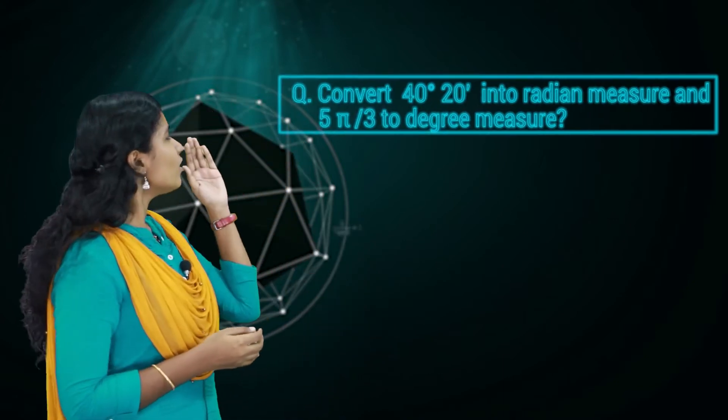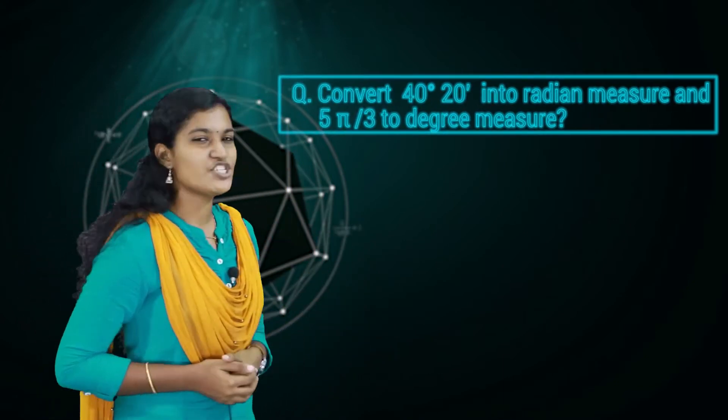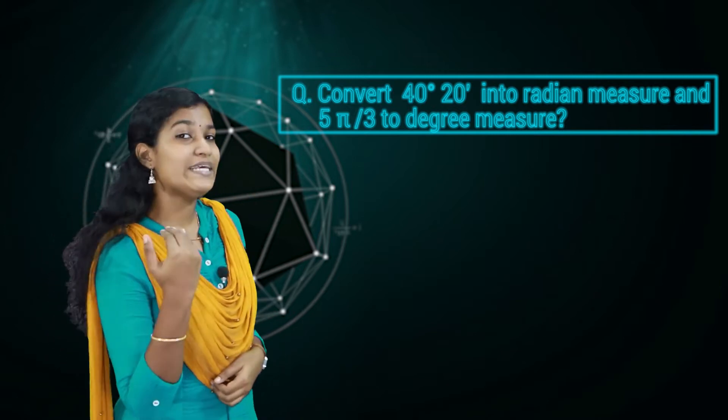We can say that real numbers are the same as radian measures — we can consider radian measure as real numbers. Now, the first question is: convert 40 degrees 20 minutes to radian measure, and convert 5π/3 radian measure to degree measure.